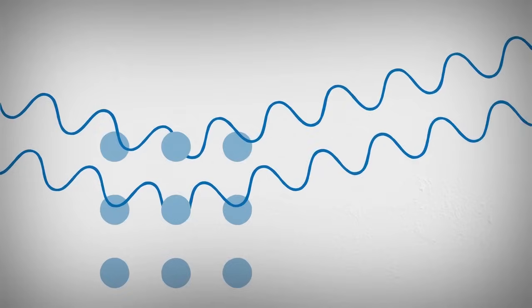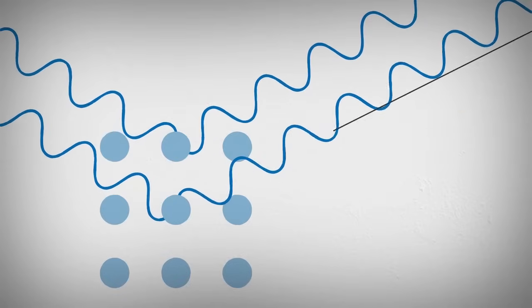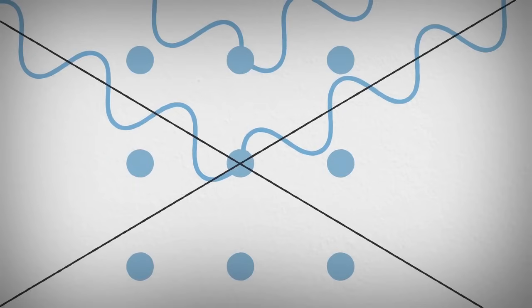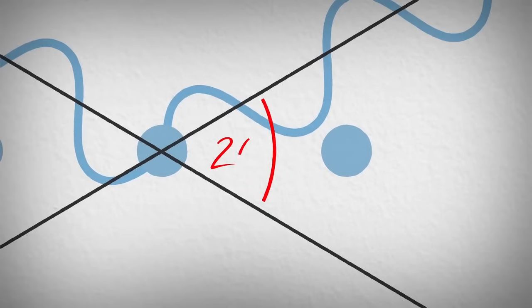Strong amplification of the emitted signal occurs at very specific angles, where the scattered waves constructively interfere. This effect is called diffraction. The angle between the incident and the scattered beam is called two theta.